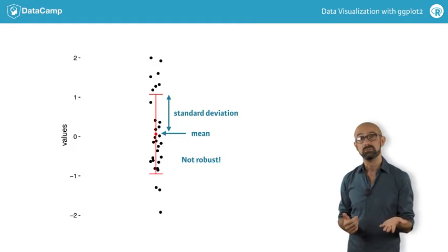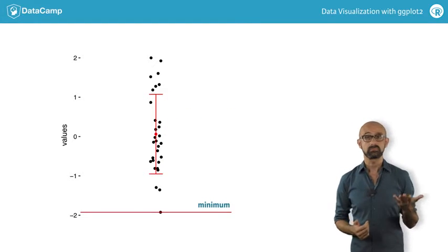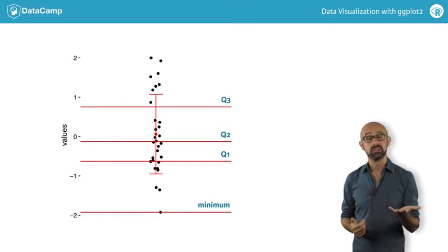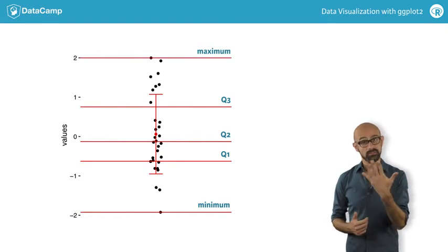An alternative robust system describes the minimum, the first, second, and third quartiles, and the maximum, thus the five-number summary.